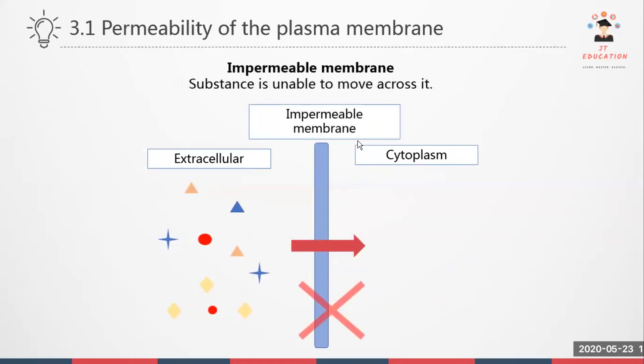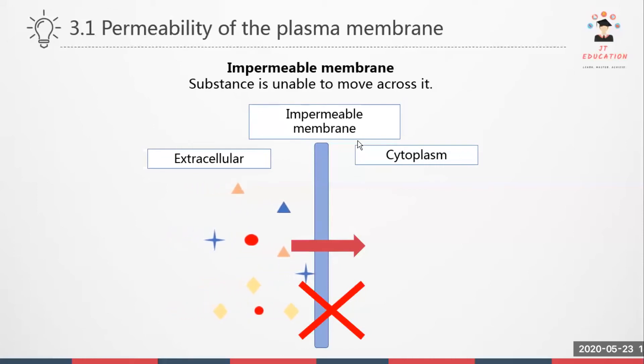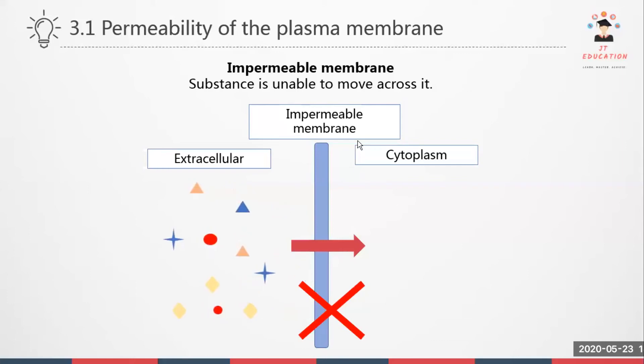When extracellular substances want to move in but they cannot, substances are unable to move across it. This is what it means by impermeable membrane.